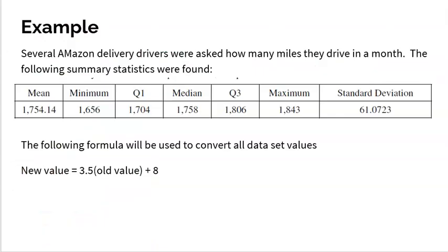Here is another example. Several Amazon delivery drivers were asked how many miles they drive in a month. Every driver had to tell me how many miles they put on their van in the month or the truck. And here are the summary statistics. So here's all of our important data. Let's just say that for some reason, Amazon's doing some type of calculations. And what they want to do is they want to get a new value. Maybe this is going to affect gas prices or salary. Here's their plan. They're going to take all the old values. Whatever number the Amazon truck drivers gave - I drove 1,000 miles, I drove 900, I drove 2,500. They're going to multiply it by 3.5 and add eight. So we're going to do both. We're going to multiply and add.